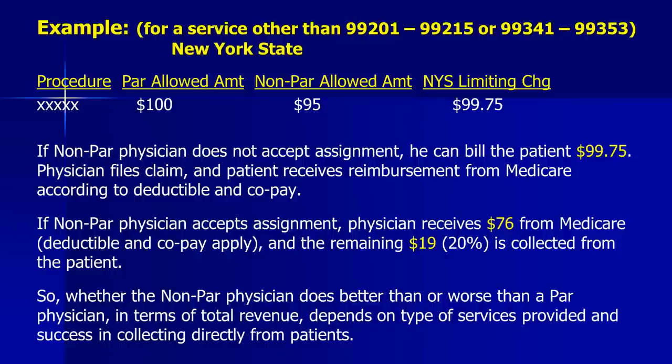As an example in New York State: if a non-par physician does not accept assignment, they can bill the patient $99.75 for a service where the par allowed amount is $100 and the non-par allowed amount is $95. The physician files the claim and the patient receives Medicare reimbursement according to deductible and copay, with the remaining $19 collected directly from the patient. Whether the non-par physician does better or worse than a par physician depends on the services provided and success in collecting directly from patients.